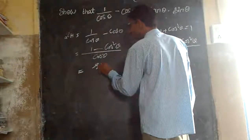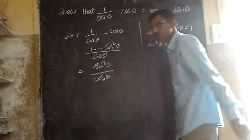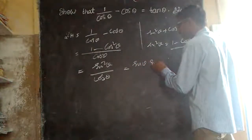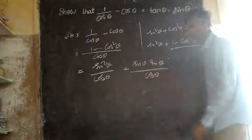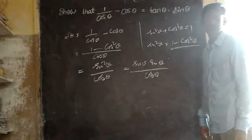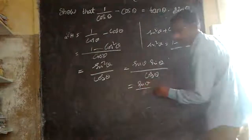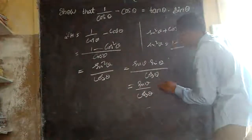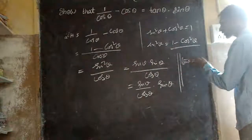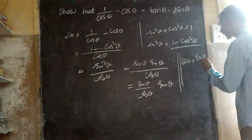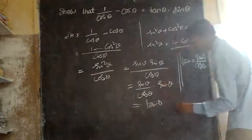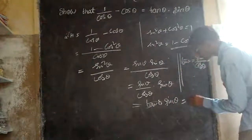So sin square theta by cos theta. That is equal to sin theta into sin theta by cos theta. Sin theta by cos theta is nothing but tan theta — I already explained. So in place of this I will write tan theta into sin theta. That is LHS equals RHS.